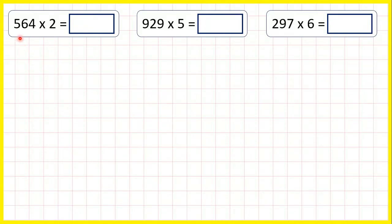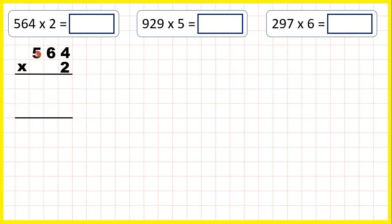Now let's multiply a three-digit number by a single-digit number using the expanded column method. We write our question out with the larger number on top, and here we're going to need three answer lines because we have three digits in our number. For this first answer line we're multiplying the ones digits, and four times two is eight.